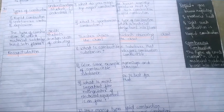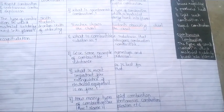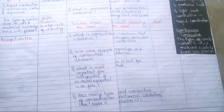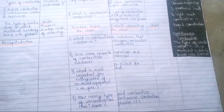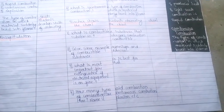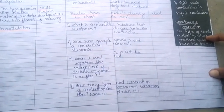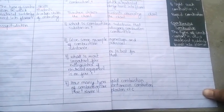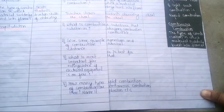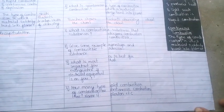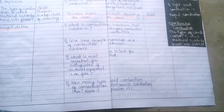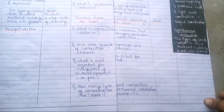For recapitulation, we ask questions covering everything we taught — from the first presentation to the second. We take about four to five questions, not more, as it is time-consuming. The four questions are: What is a combustible substance? Give an example of a combustible substance. What is the most important fire extinguisher if electrical equipment is on fire? How many types of combustion are there?